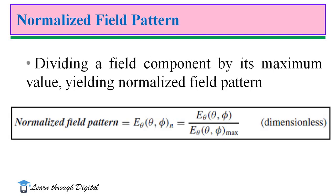Normalized field pattern: dividing a field component by its maximum value yields the normalized field pattern. The normalized field pattern is E-theta(theta, phi) divided by E-theta(theta, phi) maximum. That is, E-theta is the electric field strength at a distant point P divided by the maximum value of the electric field component. That is called the normalized field pattern.